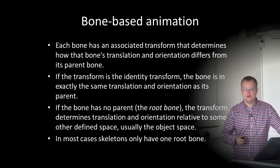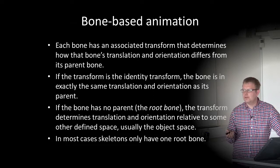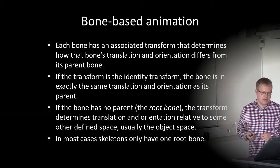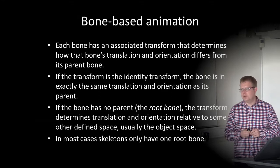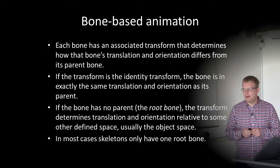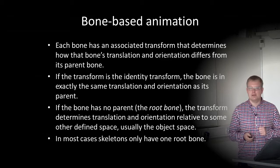The identity transform is a matrix with ones on the main diagonal and zeroes in all other entries. If a bone has no parent — meaning it's the root bone — the transform determines translation and orientation relative to some other defined space, typically the local object space of the game object. In most cases, skeletons only have one root bone, which makes calculations easier.